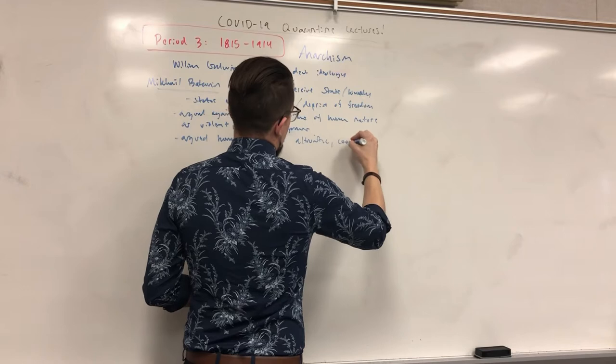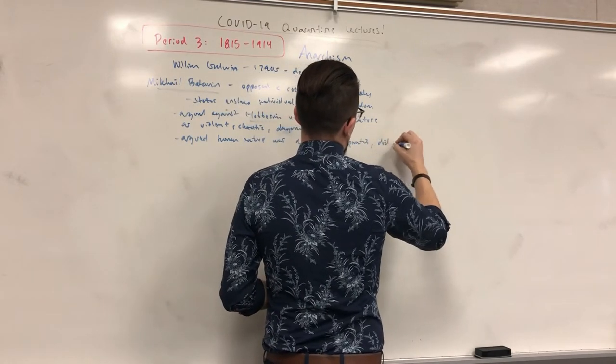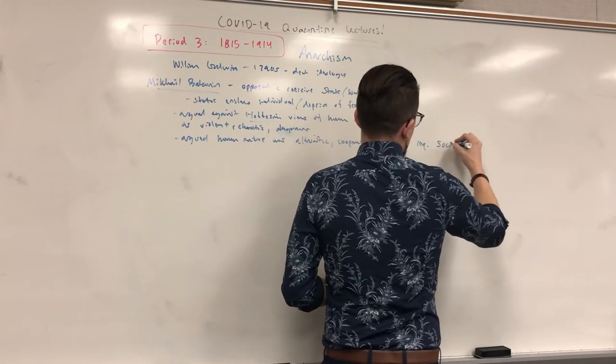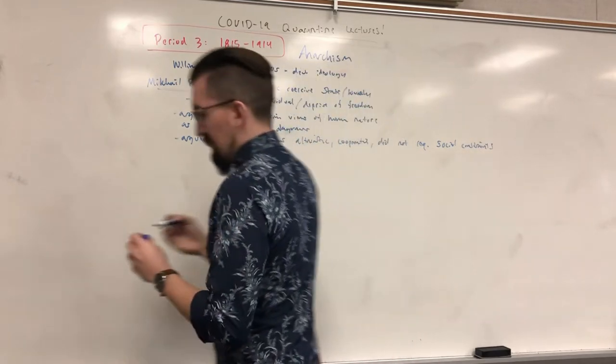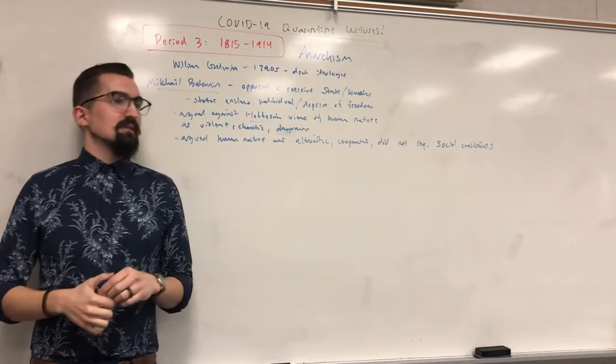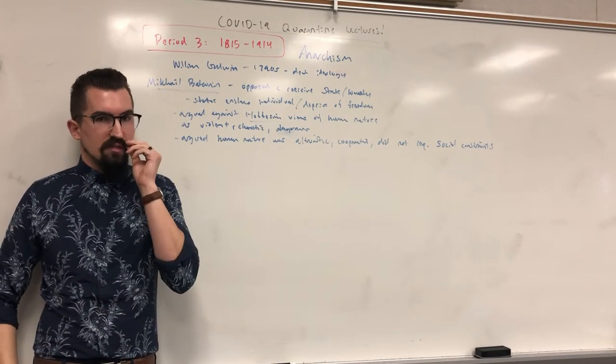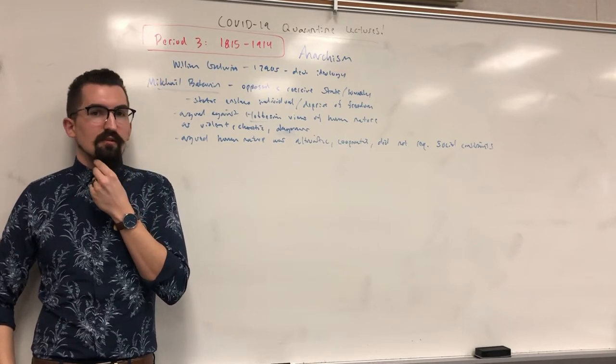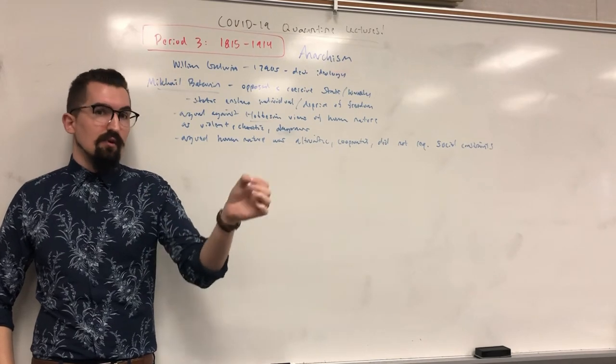So argued that human nature was more altruistic than that. Altruistic, cooperative, and did not need, did not require social constraint. You would certainly inevitably have some norms because you wouldn't want to be offending or violating others, and you would threaten your own existence, certainly, if you want to take a self-centered perspective. But he was very much against, as are anarchists in general, against a fixed set of laws that were determined by others that you have to abide by.